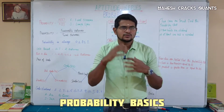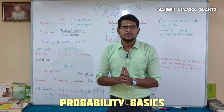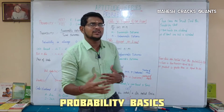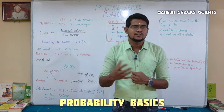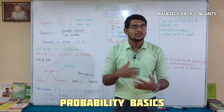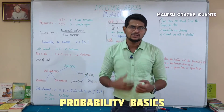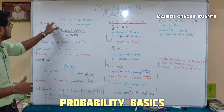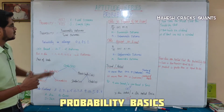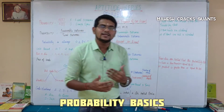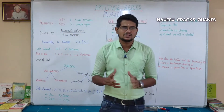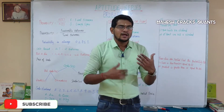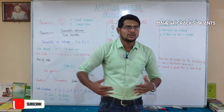Probability is not the same. So, total outcome and favorable outcome. Before that, we will use a combination topic in permutation combination. Probability is the number of events divided by the number of sample space. Event occurrence is the favorable outcome, and the sample space is the total outcome.